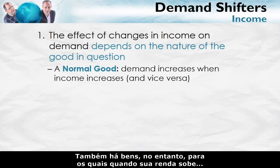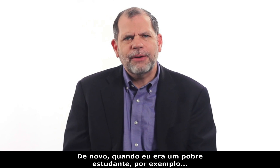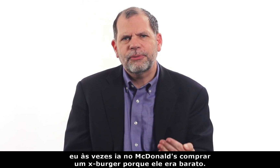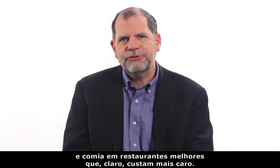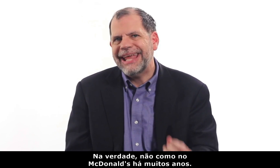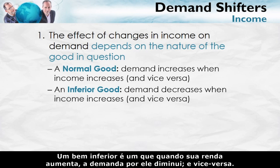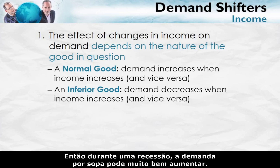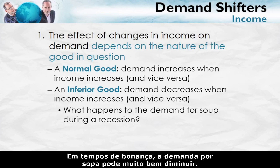There are also goods, however, for which when your income goes up, your demand for them actually goes down. When I was a poor student, I sometimes went to McDonald's to buy a cheeseburger because it was cheap. When my income went up later, I ate at McDonald's less often and ate at better restaurants, which cost more. An inferior good is one which, when your income goes up, the demand for it goes down and vice versa. For instance, think about soup — a cheap and easy meal. During a recession, the demand for soup may well go up. During boom times, the demand for soup may well go down.